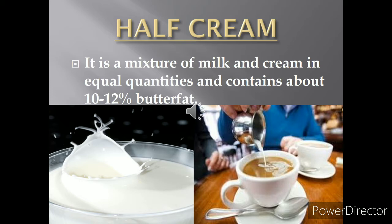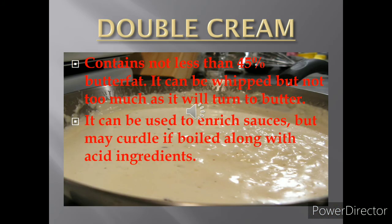Next is double cream, which contains around 45 percent butter fat. It can be whipped, but if you whip it too much it will turn into butter, so you have to handle it carefully. It can also be used to enrich sauces, but if you use this cream along with any acid there are chances it may split, so you should try to avoid using it with any acid.